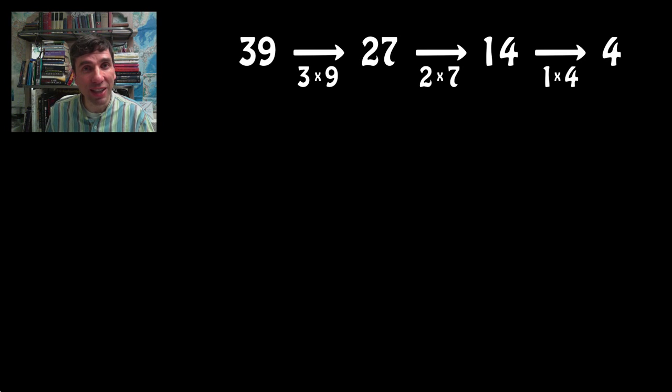You keep on doing that until you end up with a single digit. Then you look how many steps it took you to get there. In this case, it took us three steps to get there. So that means that the multiplicative persistence of 39 is 3.